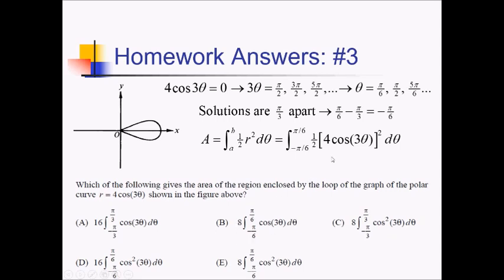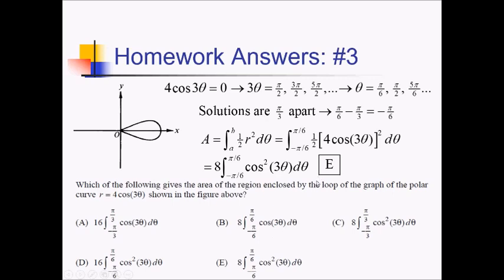That matches none of the answer choices as written, so let's clean this up. If I square the 4 and the cosine, I get 16 in front — so that becomes an 8 when I multiply by 1 half. Inside, I've just got cosine squared of 3 theta d theta. Looking at the choices, we need the 8 — that's choices B, E, and C — and we need the pi over 6's, so C is no good. Between the remaining choices, E is the only one where we have cosine being squared. So choice E.